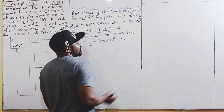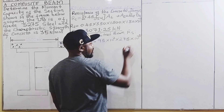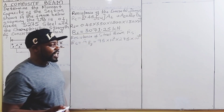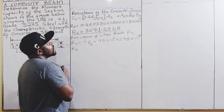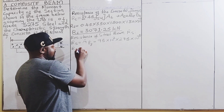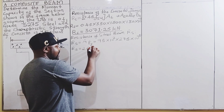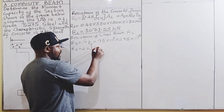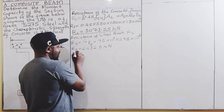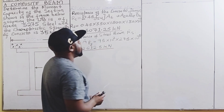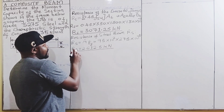Multiplying 95 × 10² mm² by the design strength of 275 N/mm², then dividing by 1000 to convert to kilonewtons, we get the resistance of the steel beam Rs = 2612.5 kilonewtons.